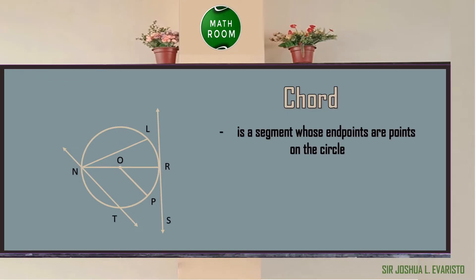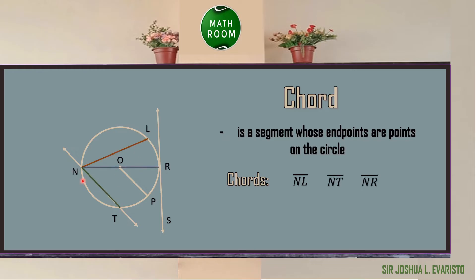A chord is a segment whose endpoints are points on the circle. On the given circle O, the chords are segment NL, segment NT, and segment MR.